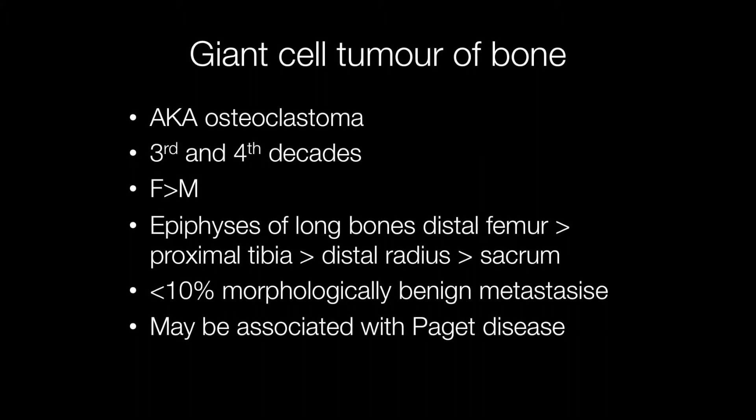Giant cell tumours of bone tend to occur in the third and fourth decades, that's in the twenties and thirties. They are more frequent in females than males and they occur in the epiphyses of the long bones, the distal femur being the most common site, followed by proximal tibia, distal radius and the sacrum.